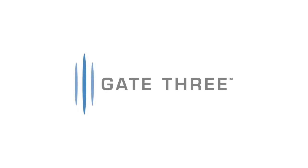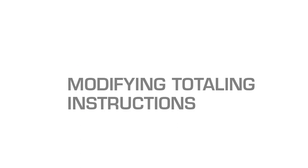Gate 3 will automatically generate totaling instructions based on the defined budget tiers, but modifications to them are possible. This video will outline how to modify totaling instructions in Gate 3 and walk you through a couple of examples and possible scenarios. There may be times when you will be required to update and modify your owner billing PDF.